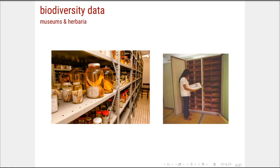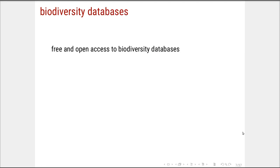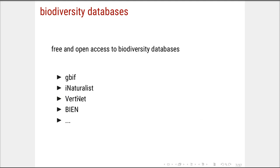When we think of biodiversity data, we usually think of data of species in a particular time and place. Those data are stored in museums and herbaria, which store the data in databases. In this era, we have a lot of access to free and open biodiversity databases, such as GBIF, iNaturalist, and VertNet. iNaturalist is built through citizen science; VertNet is for vertebrates; BIEN is the Botanical and Ecology Networks. We have links to these databases at the end of the class.